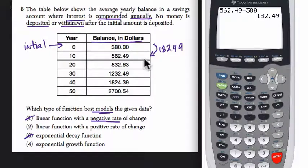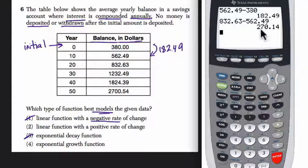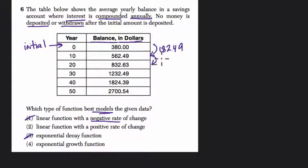So if it's linear, we can tell, because the next jump will also be 182. Now you can kind of estimate that it's not. You can see that 562 plus about 300 is 832. So this is not the same rate of change, which means it's not linear, but let's confirm that. 832.63 minus the next difference here, 562.49. And you can see it's almost 300. It's 270.14.